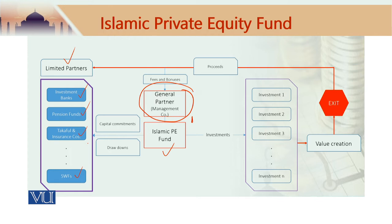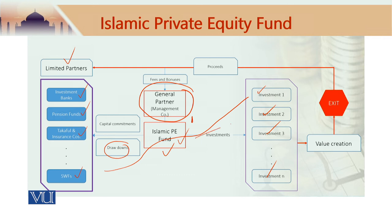Limited partners do not invest straight away in the Islamic private equity fund; rather they would give their commitments. For example, an Islamic investment bank may say that they are committed to invest 500 million. That 500 million is available whenever the Islamic private equity fund is ready to bring a project — you can then draw down. These drawdowns happen as and when an investment project is identified and found to be worthy of investment. Whenever an investment is identified and ready, drawdowns take place and through the Islamic private equity fund, these investments are made.